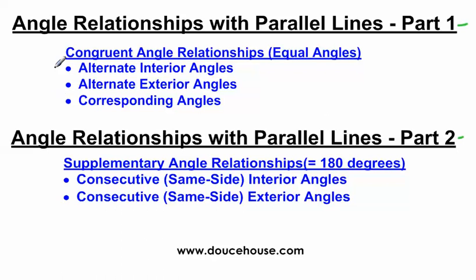Today's video is just over these three angle relationships: alternate interior angles, alternate exterior angles, and corresponding angles. These are all angle relationships that are congruent angle relationships, meaning that the angles are all going to be equal to each other. Congruent and equal basically mean the same thing.